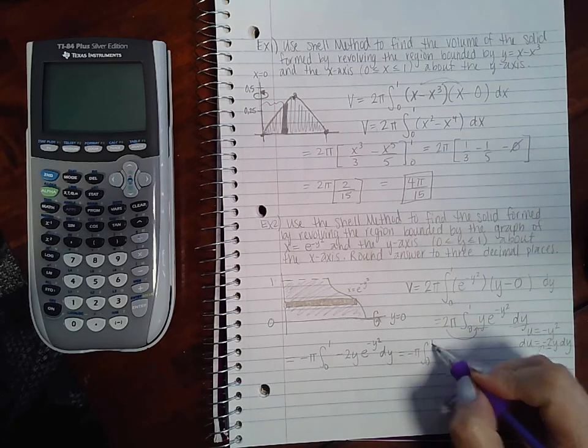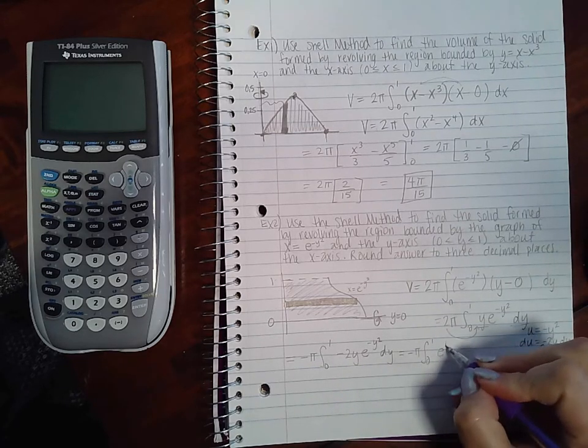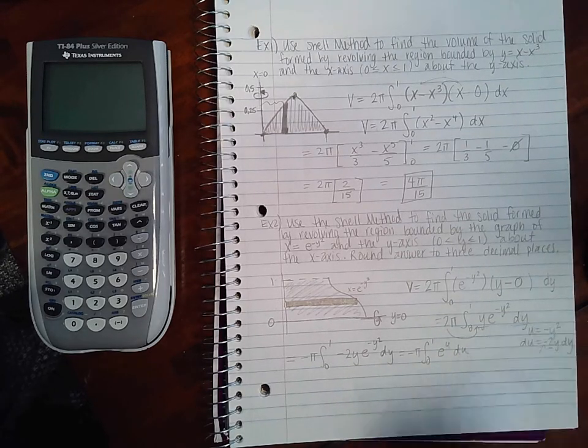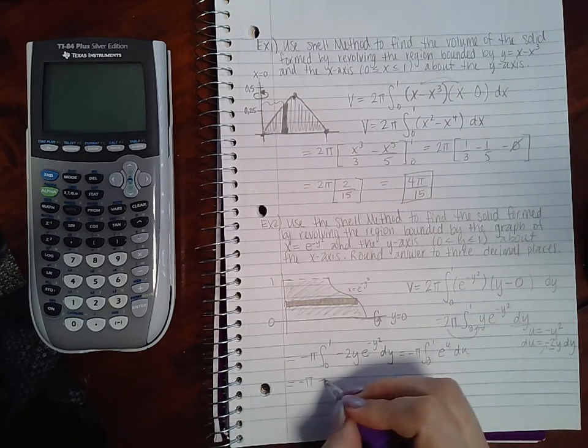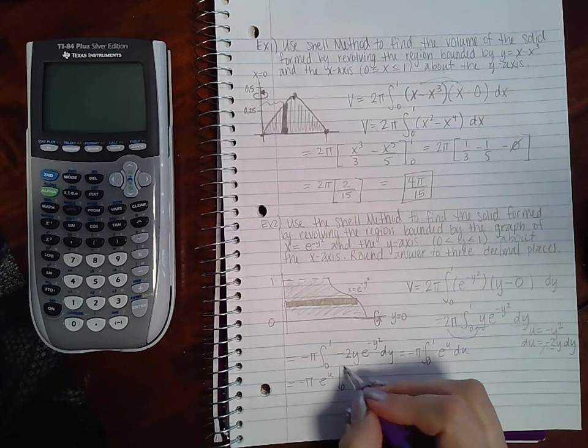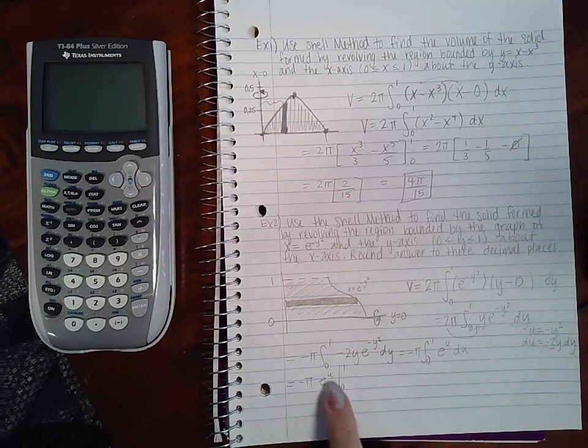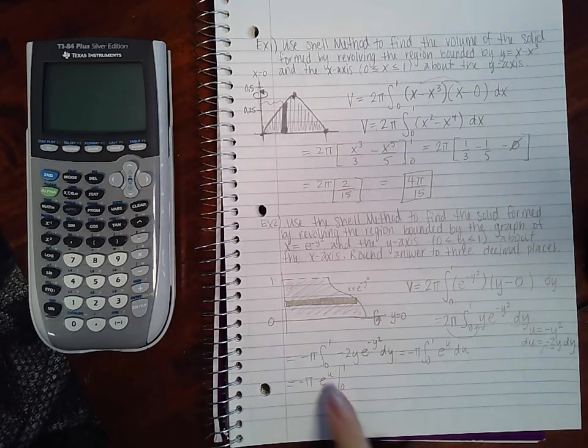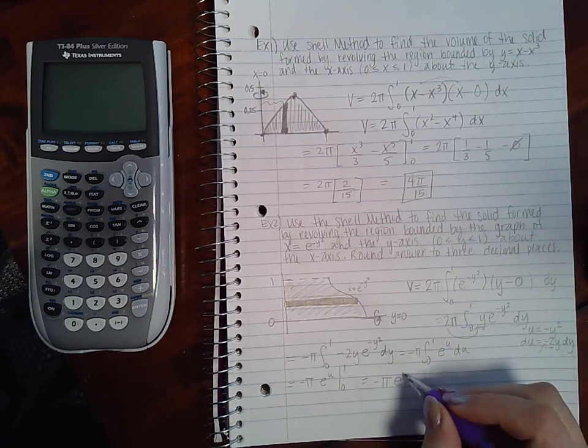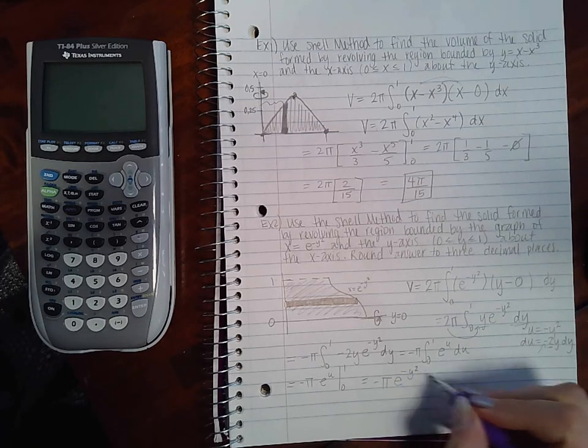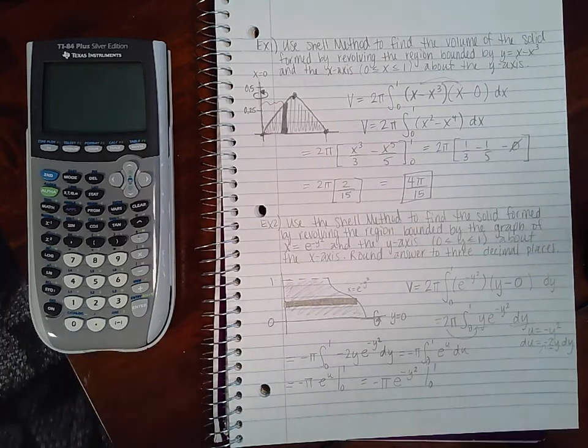And then negative 2y e to the negative y² dy. And if I use the u-substitution, these parts become the du and this becomes e to the u. And the integral of e to the u is just e to the u. But I can't quite plug in the 1 and the 0 because this 1 and 0 are y values, and this is not a y, it's a u. So I do have to back substitute and put back in my negative y².